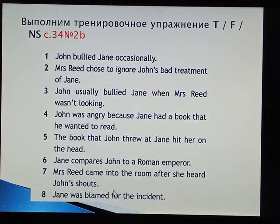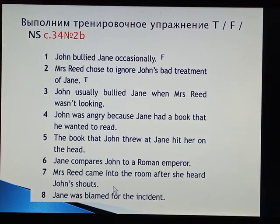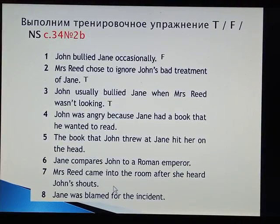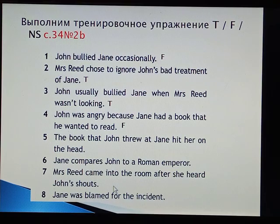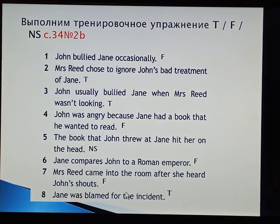Checking what you have got. John bullied Jane occasionally — it's false. Mrs. Reed chose to ignore John's bad treatment of Jane — it's true. John usually bullied Jane when Mrs. Reed wasn't looking — it's true. John was angry because Jane had a book that he wanted to read — false. The book that John threw at Jane hit her on the head — not stated. Jane compares John to a Roman emperor — it's false. Mrs. Reed came into the room after she heard John's shouts — it's false. Jane was blamed for the accident — it's true.